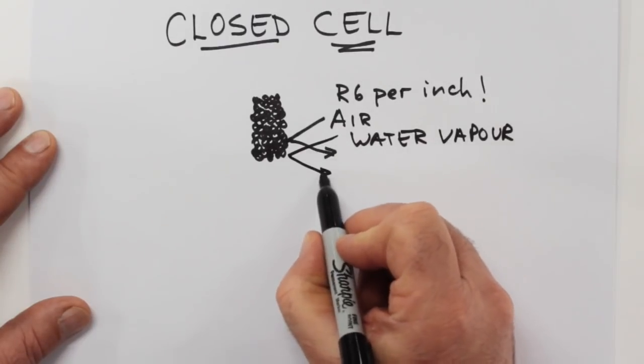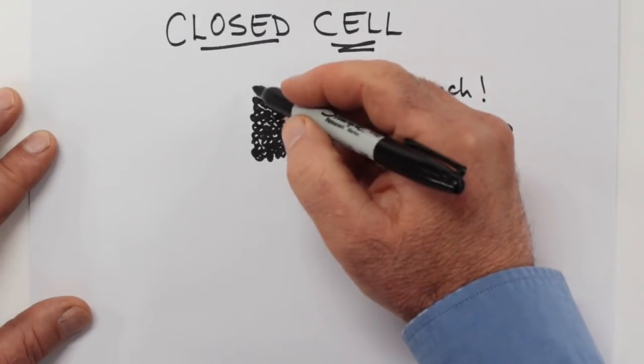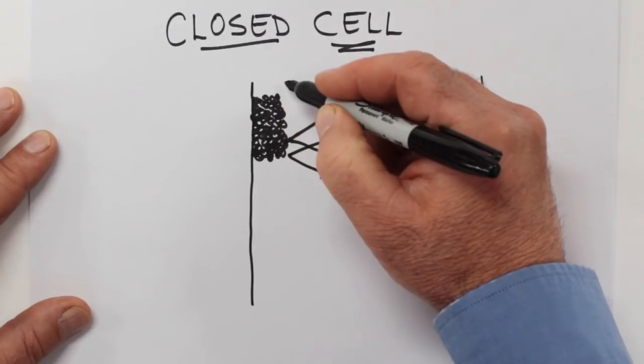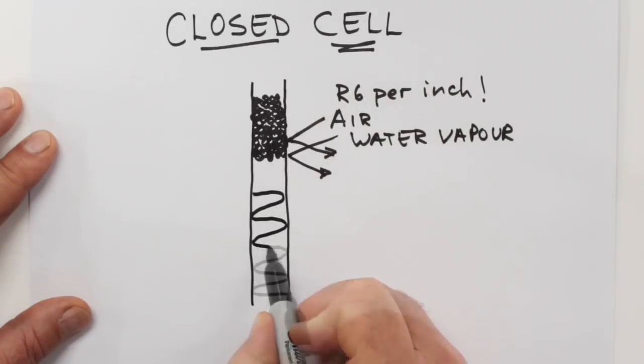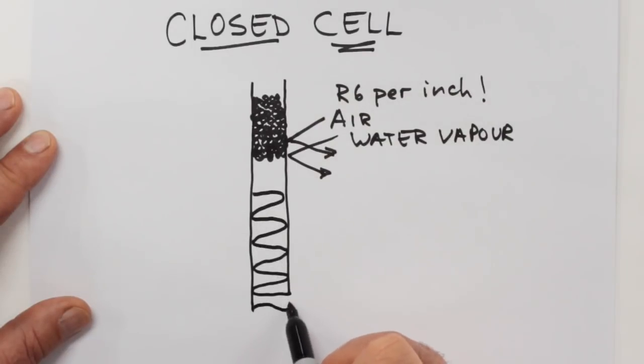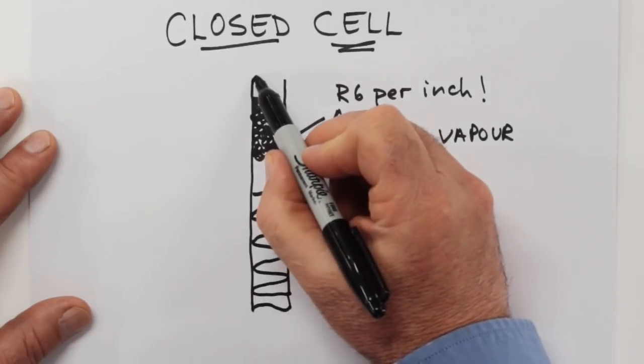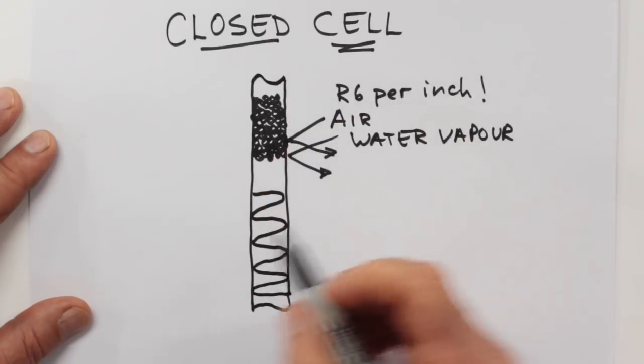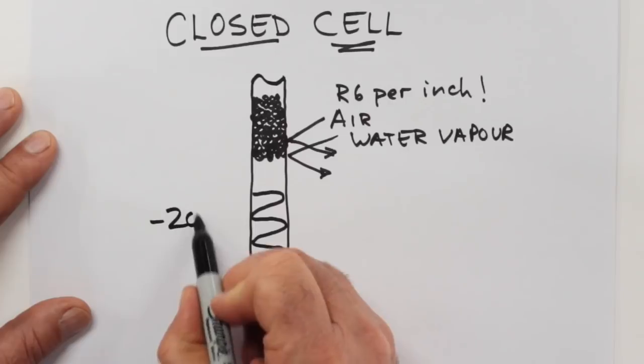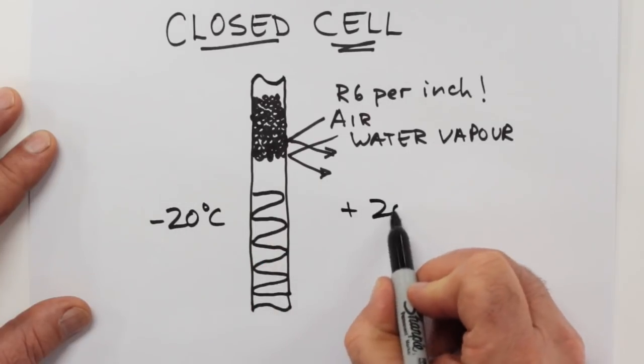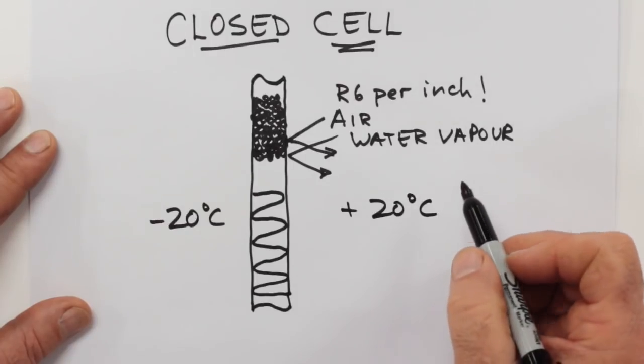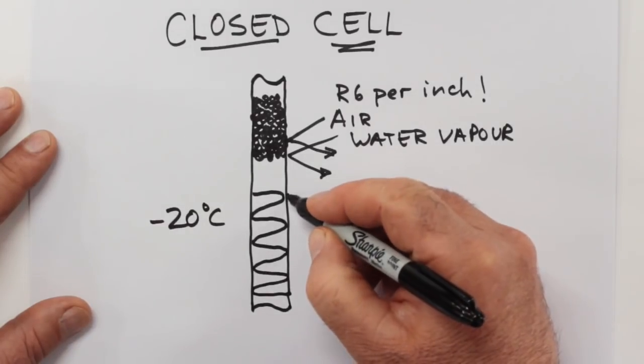So imagine for a moment you've got a wall structure. The top part of our cross section is closed cell spray foam and the bottom section is more conventional fiber-based insulation. This works really well, but it's kind of vulnerable in a way too. Let's say it's minus 20 degrees Celsius on the outside of the wall and plus 20 degrees Celsius on the inside. This is a pretty typical wintertime situation.